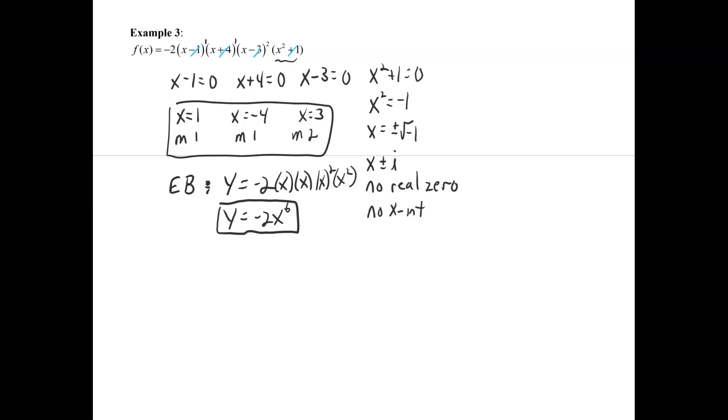And that means that on the outside of the function, it's going to do what a 6-degree negative power function does. It's going to go down on both sides. It's something like this. We're not talking about the inside, we're just talking about the outside. That's what it's going to look like on the outside of the function.